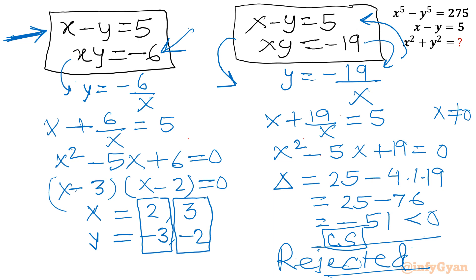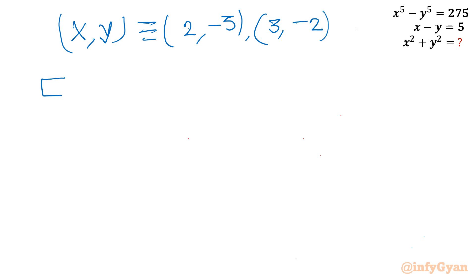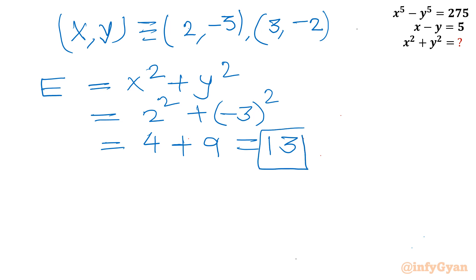Let us now calculate our expression. For (x, y) equals (2, minus 3): x squared plus y squared equals 4 plus 9 equals 13. Similarly for (3, minus 2): 9 plus 4 equals 13. So the expression value E equals 13. Thank you so much for watching, friends. Do not forget to like, share, and subscribe. Bye-bye till next video, good luck, take care.